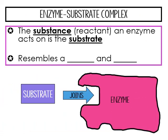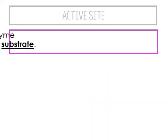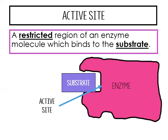The substance — which is the reactant — that an enzyme acts on is called the substrate. Looking at this image, the substrate joins into the enzyme and fits perfectly, resembling a lock and key. The key is your substrate and the enzyme is your lock. There is a specific area of an enzyme where the substrate can bind, called the active site — a restricted region specific to that particular substrate. If it's not the right substrate, it won't bind correctly.